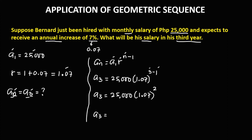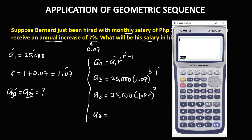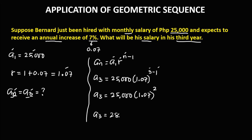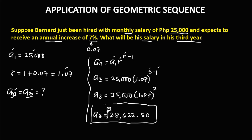We're going to use a calculator. Starting with 1.07 to the power of 2, that gives 1.07 squared, then times 25,000. So a sub 3 is equal to 28,622.50 pesos. This is the expected salary of Bernard in his third year.